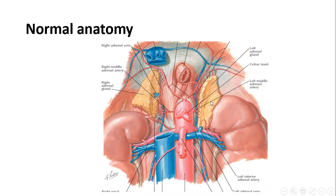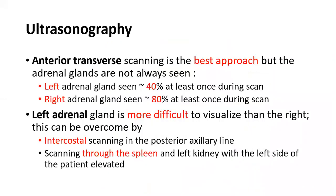Visualizing the adrenal glands by ultrasonography is very difficult, even for experienced radiologists. In anterior transverse scanning the adrenal glands are not always seen; the left adrenal is shown in about 40% of cases while the right is seen in 80%. The left is harder to visualize due to air in the stomach and bowel gas. The best approach for the left adrenal is intercostal scanning in the posterior axillary line through the spleen and left kidney, with the left side elevated.